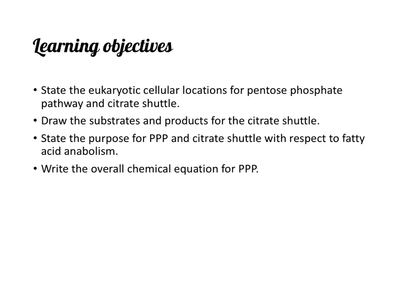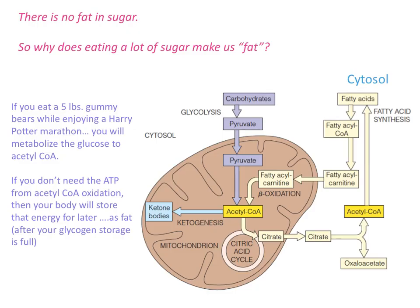Okay, hello people. So today is the first day of fatty acid metabolism because we're going to start making a fat. It's going to take us two days, two lecture days. You should be able to state the cellular locations for pentose phosphate pathway, which is abbreviated as PPP, and the citrate shuttle. Draw the substrates and products for citrate shuttle, state the purpose of these pathways with respect to fatty acid metabolism, and write the overall chemical equation for pentose phosphate pathway. Here's the story: there is no fat in sugar, so why does eating a lot of sugar make us fat?